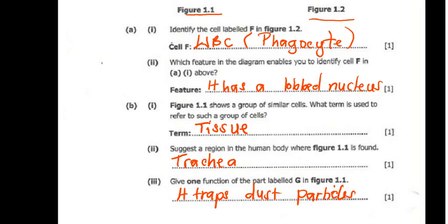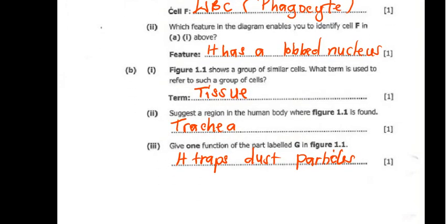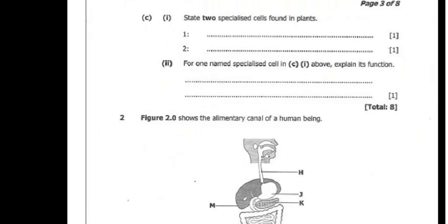And then the next question says, state two specialized cells found in plants. So there are a lot of specialized cells in plants, but for now we can mention the root hair cell, the root hair cell and the palisade cell.